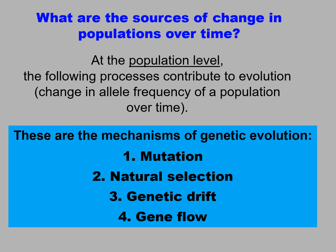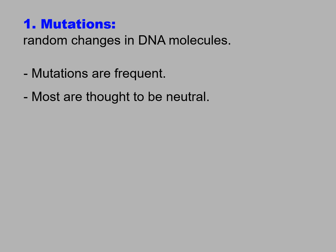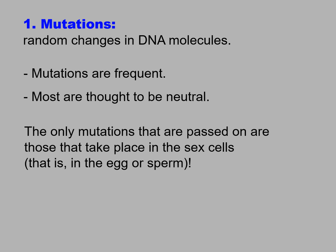We have already learned about the first two of these — mutation and natural selection. These four mechanisms contribute to evolution, that is, they contribute to change in the allele frequency of a population over time. To review, what are mutations? They are simply random changes in the DNA molecules. They are frequent, and most are thought to be neutral. But the only mutations that are passed on to the next generation are those that take place in the sex cells — that is, in either the egg or the sperm.